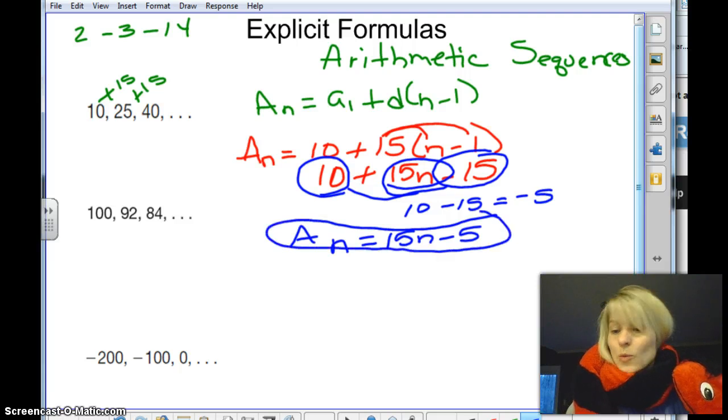So now, when they do tell us, like, find the 10th term, I could just plug in 10 in here. That'd be 150 minus 5, so we know that's 145. So now I have a formula for this sequence, and it's called the explicit formula.